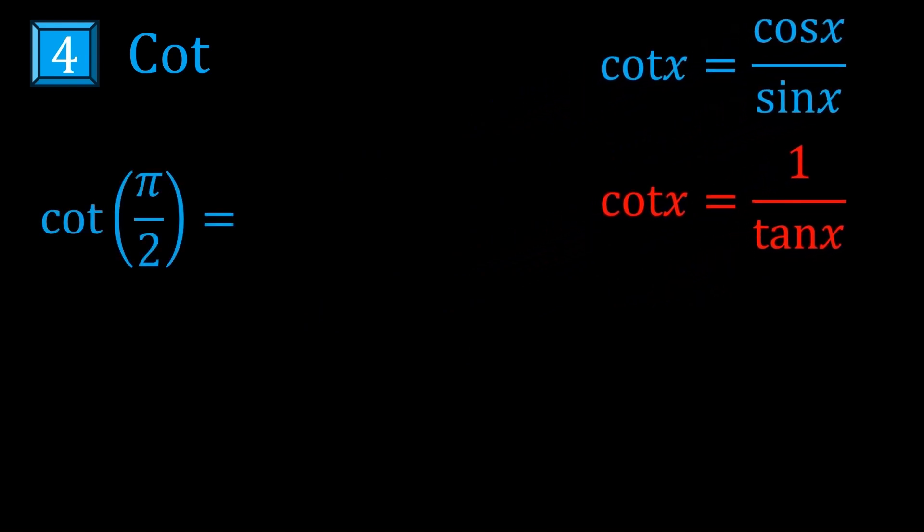The next one a lot of people don't know. Cot x is actually defined as cos x on sine x, not as 1 on tan x, even though both are equivalent. Yet there is a bit of a weird thing happening at cot pi on 2. If you use the 1 on tan x definition, you get 1 on tan pi on 2. But is that undefined? Because tan pi on 2 is undefined.